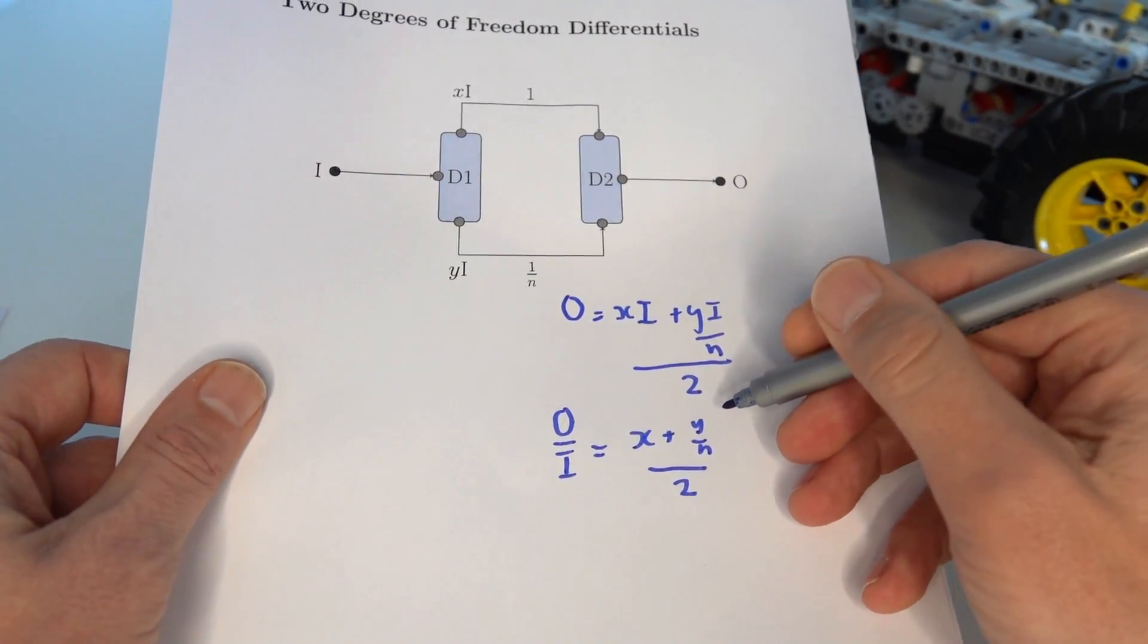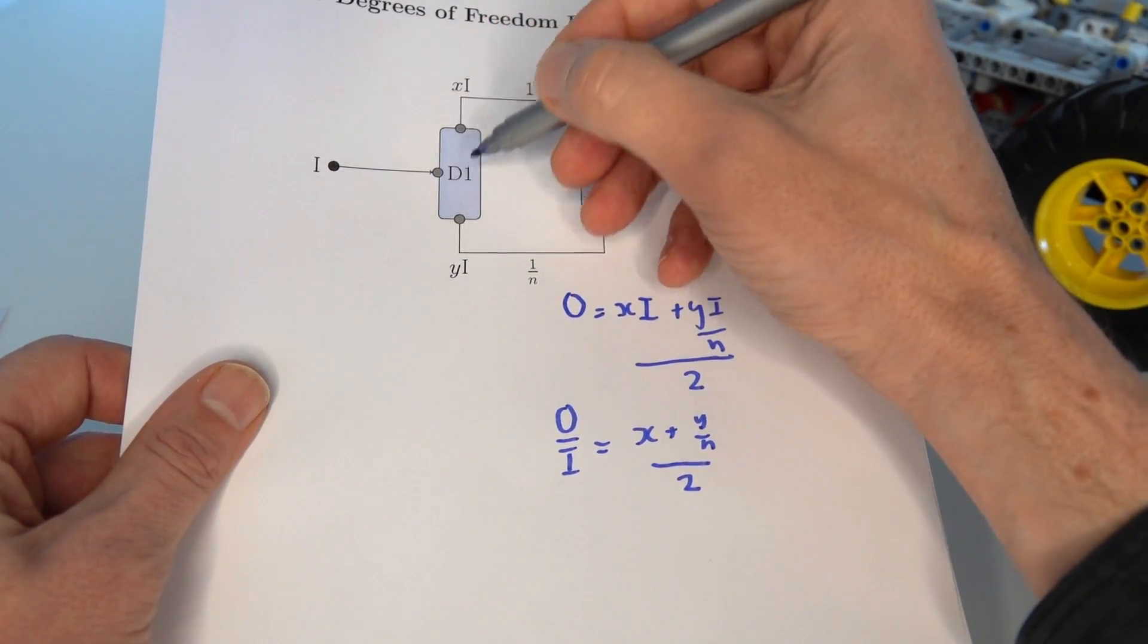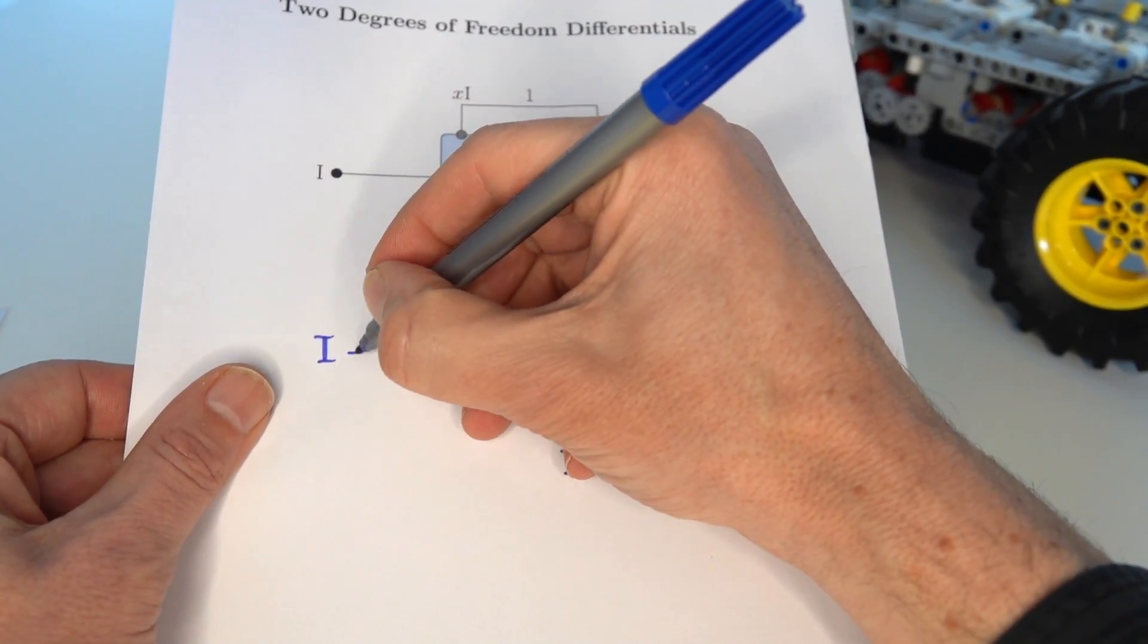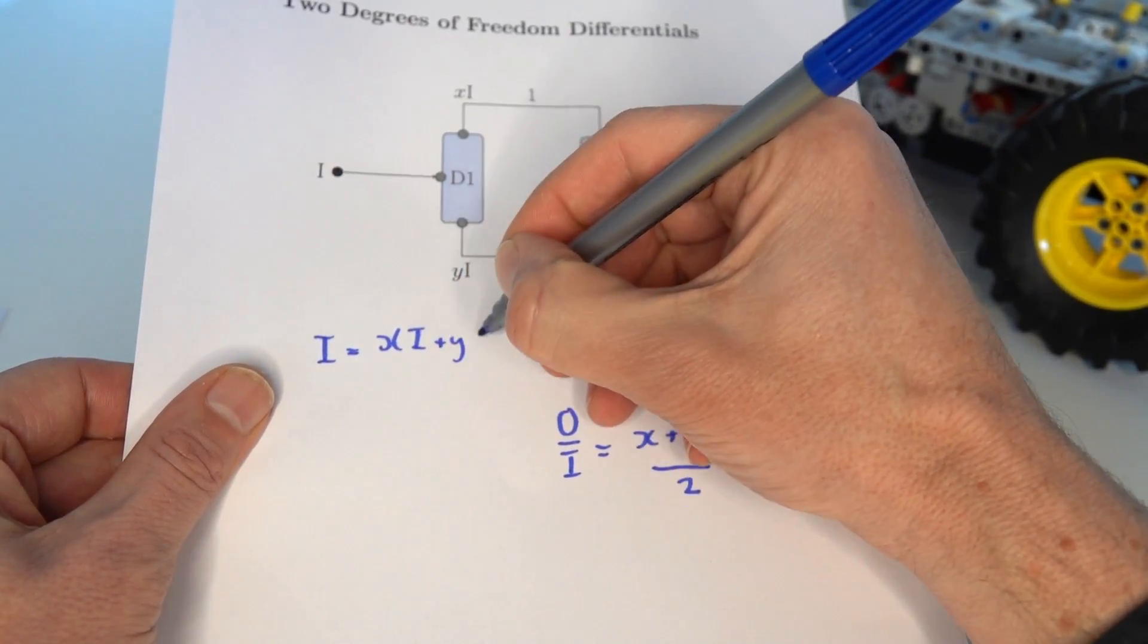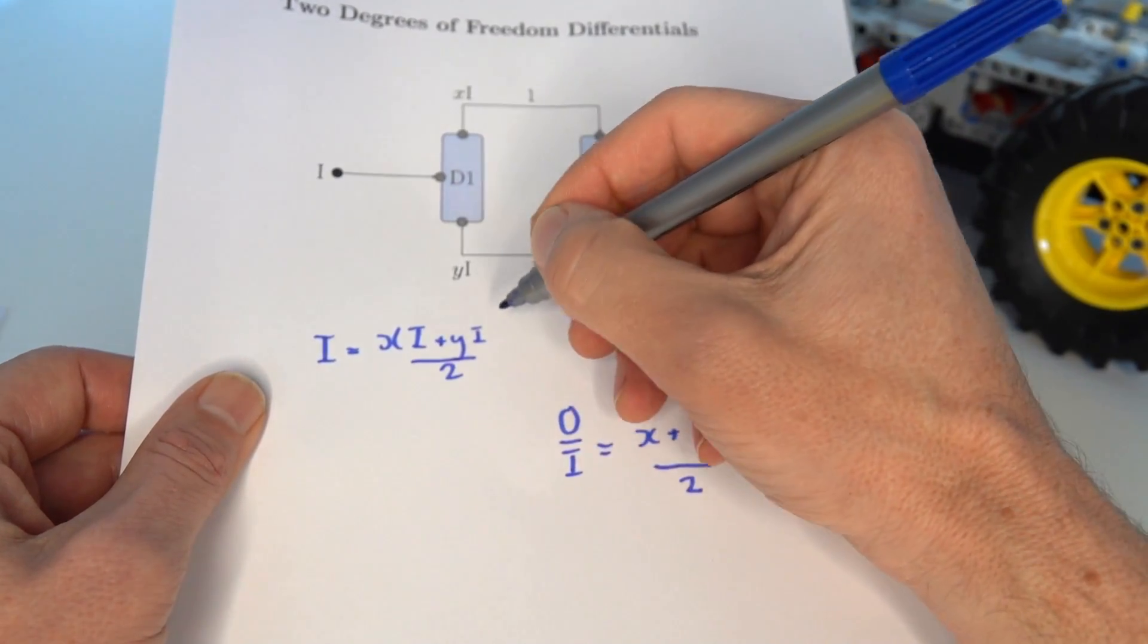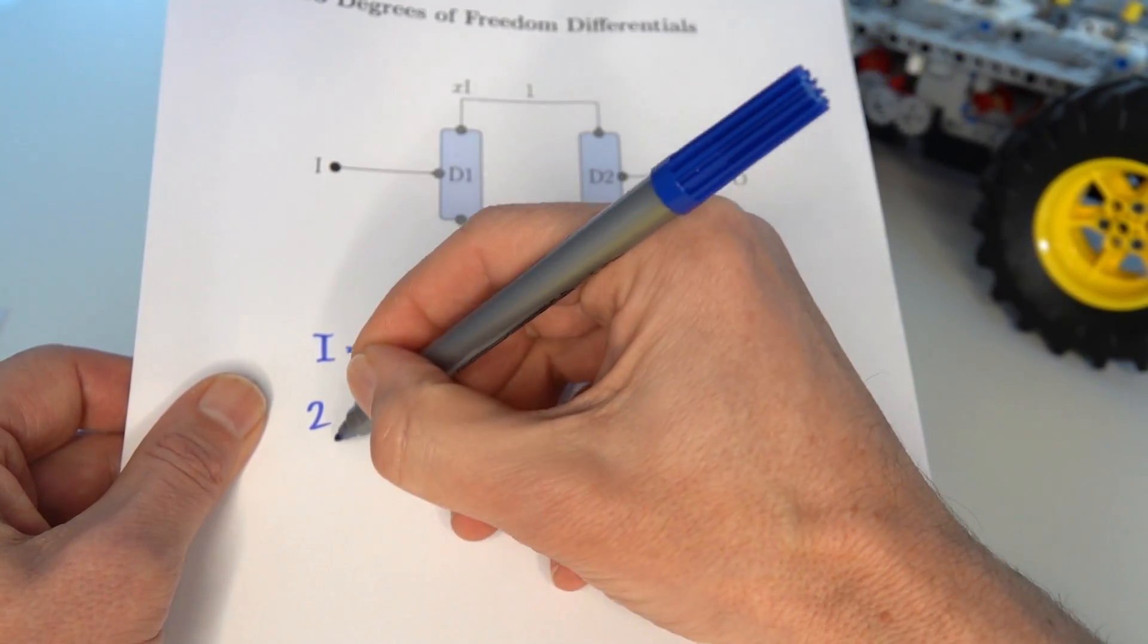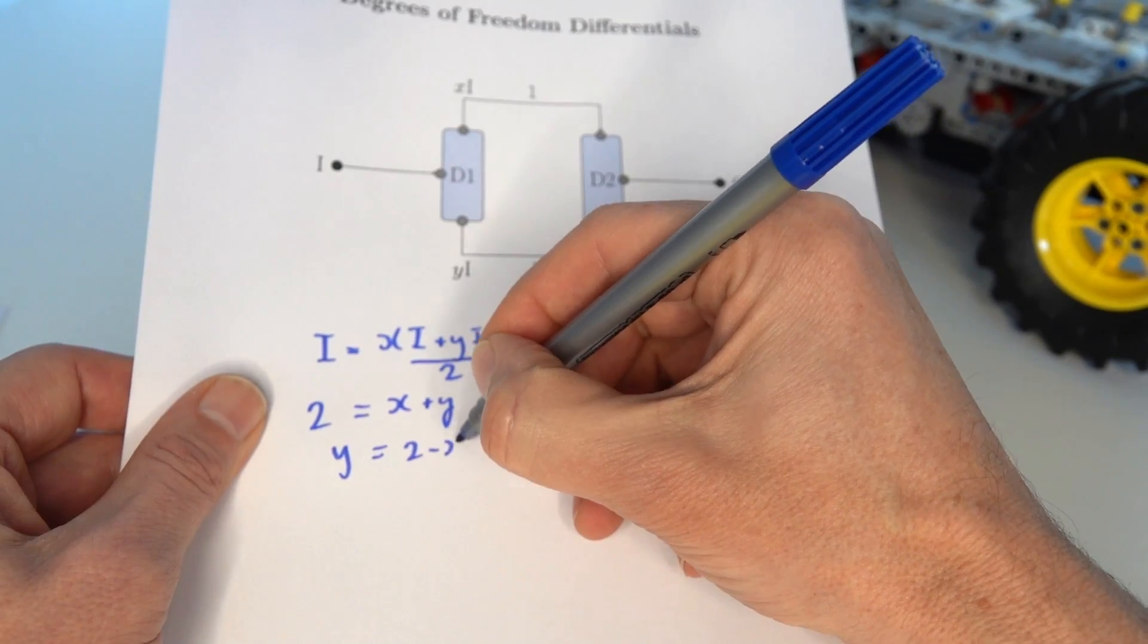We can then eliminate i by looking at the same relationship at the input. We have that i is the average of xi and yi so the input is equal to xi plus yi over 2. Again we can eliminate the i's in this case and we end up with 2 is equal to x plus y and therefore y is equal to 2 take away x.